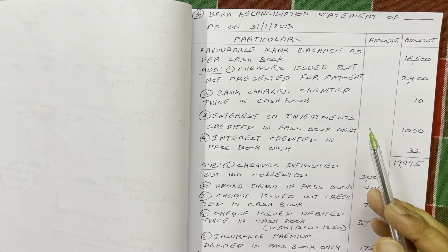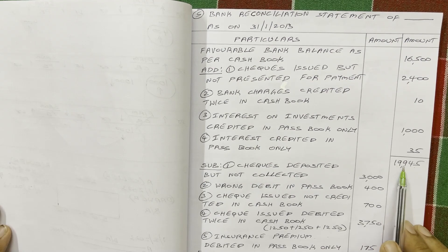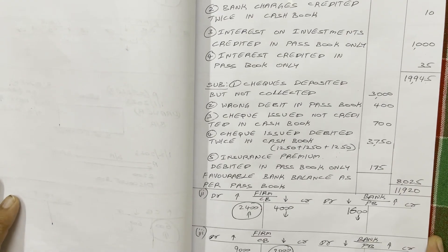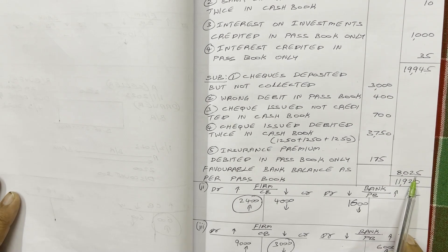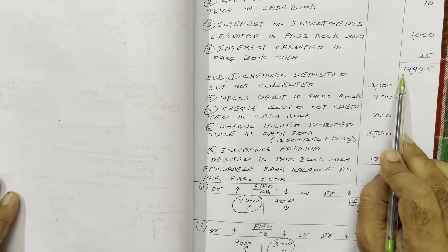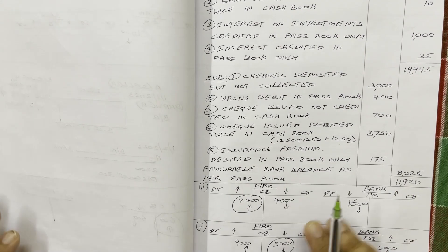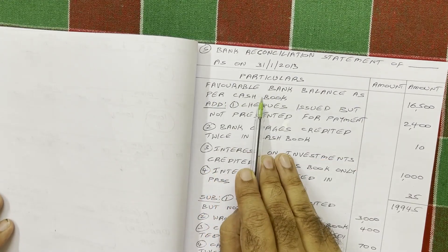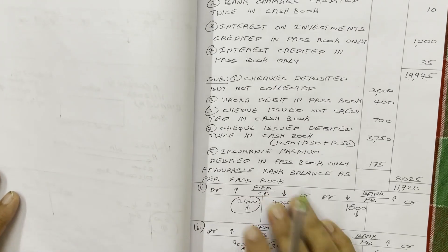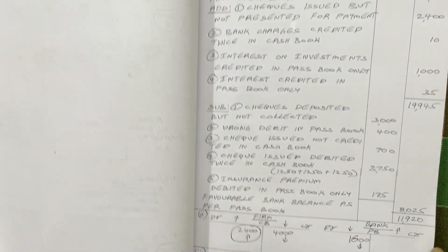Finally, we total all the amounts. The additions total to 19,945 and the inner column subtractions total to 8,025. So 19,945 minus 8,025 equals 11,920. Since the question gives favorable bank balance as per cash book, the answer is: favorable bank balance as per pass book = 11,920. This is the end of the present problem — take a screenshot of the solution.